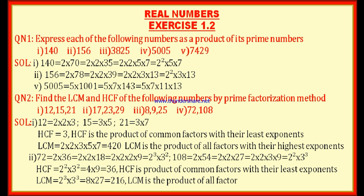Now let us find the LCM. LCM is the product of all factors with their highest exponents. The factors are 2 and 3 in both numbers. For 2: the highest exponent is 3, so we write 2³. For 3: the highest exponent is 3, so we write 3³. LCM = 2³ × 3³ = 8 × 27 = 216. Therefore, LCM of 72 and 108 is 216.